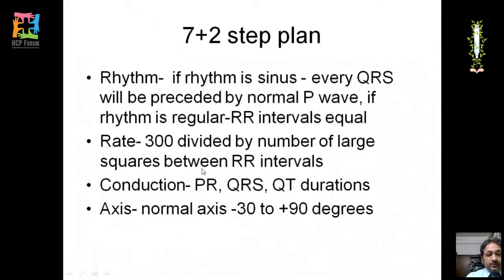To calculate the rate, divide 300 by the number of large squares between the RR interval. Conduction is interpreted by the durations of the PR, QRS, and QT intervals.